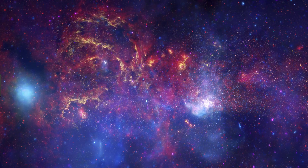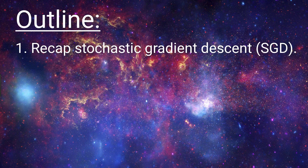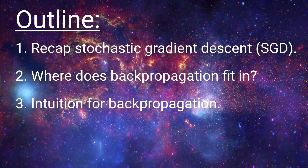We're going to be building on concepts that we covered in a couple of previous videos. These two videos cover what it means to train an artificial neural network and how a network learns. So if you haven't seen those yet, go ahead and check them out now, and then come back to this video once you finish up there. Here we're going to start out by first going over a quick recap of some of the points about stochastic gradient descent that we learned in those previous videos. Then we're going to talk about where backpropagation comes into the picture, and we'll then spend the majority of our time discussing the intuition behind what backpropagation is actually doing.